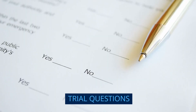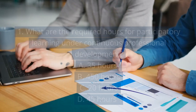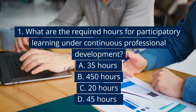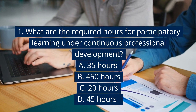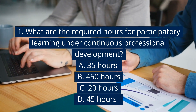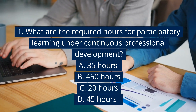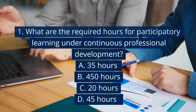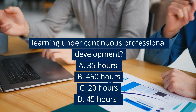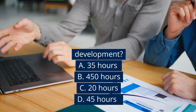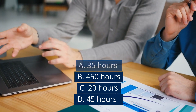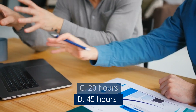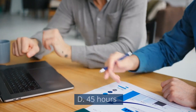Trial question 1: What are the required hours for participatory learning under continuous professional development? A. 35 hours. B. 450 hours. C. 20 hours. D. 45 hours.